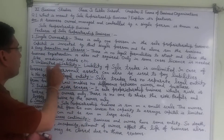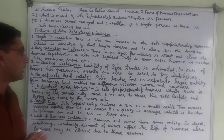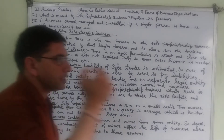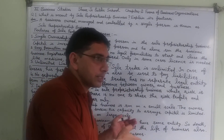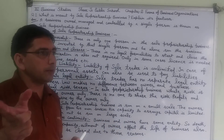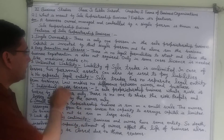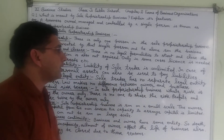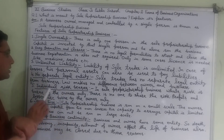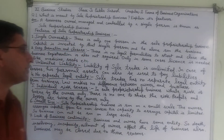There is unlimited liability — there is no limit on how much liability the owner may have to pay in case of losses. His personal assets can also be used to pay off the liabilities of the business.